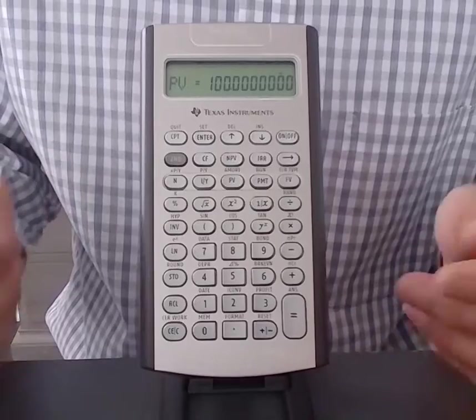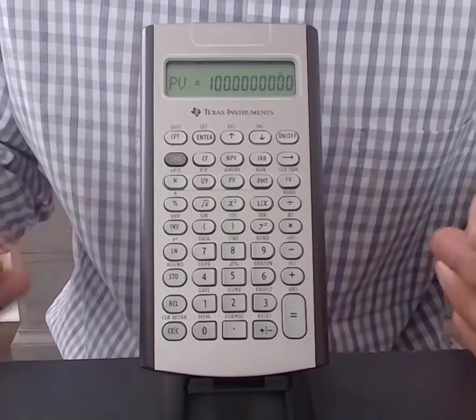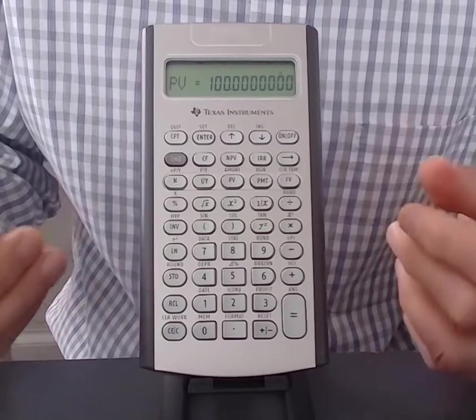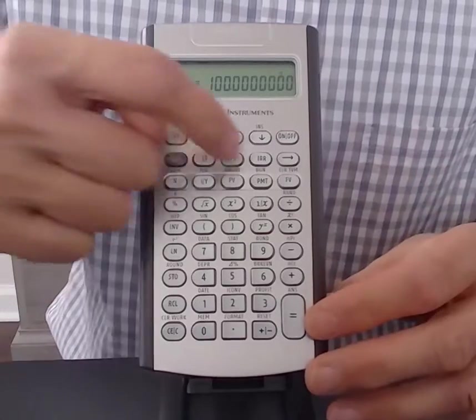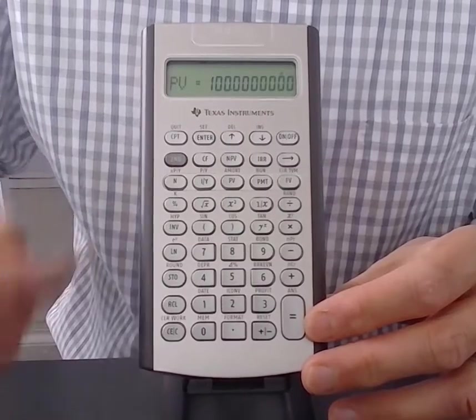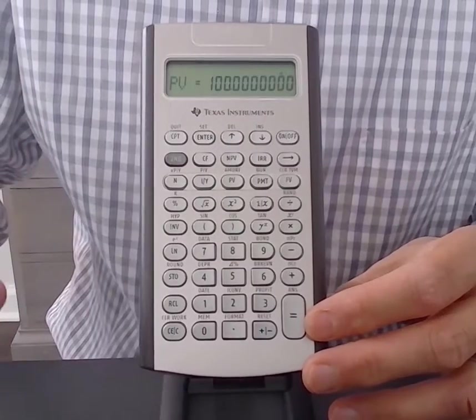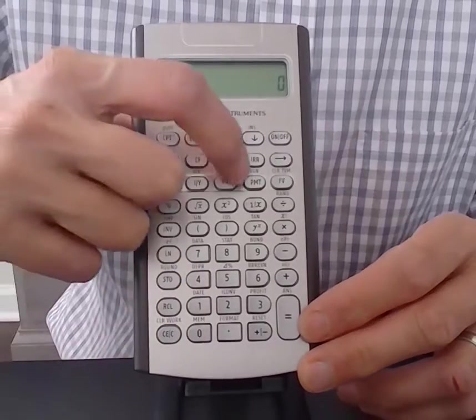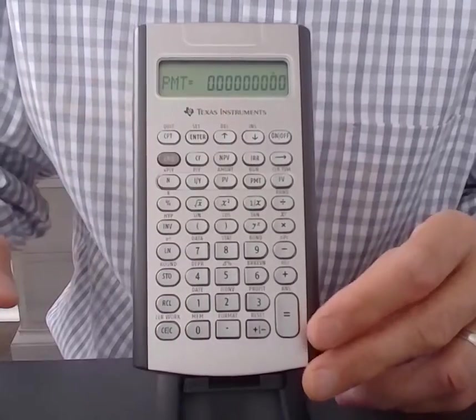Because I'm starting out doing a lump sum problem, there is no repeated cash flow in the future. The PMT value for payment would be for repeated cash flows. Since the problem I'm doing right now doesn't involve that, I want to make sure that there's a zero storage for PMT. That's the default value.